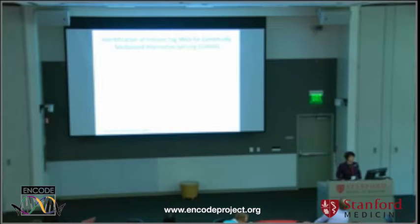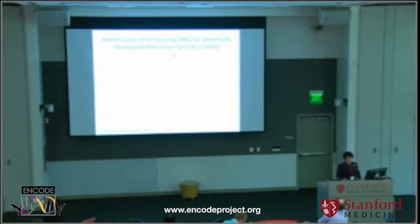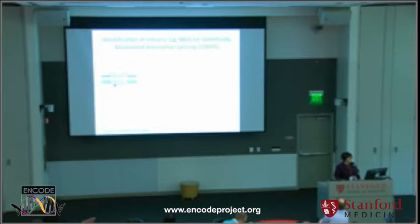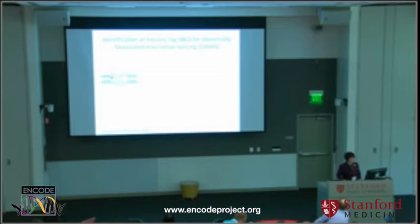Our new method is called IgMAS — identification of intronic tag SNPs for genetically modulated alternative splicing. Suppose we are focusing on an intronic SNP with an A or G allele, and this intronic SNP is a regulator of splicing. If you had an A allele, then you have exon inclusion. If you had a G allele, you had exon skipping.